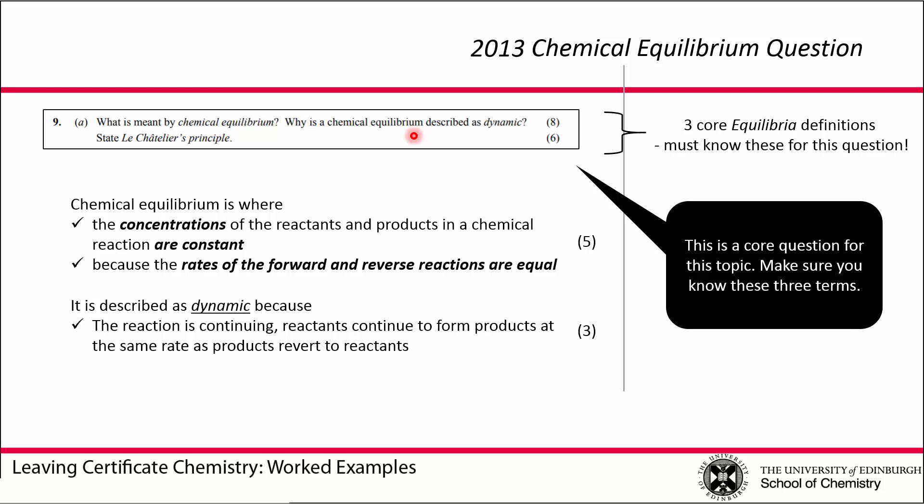It's called dynamic because the reaction is continuing. Even though the concentrations are constant, there are still underpinning reactions—forward reaction and the reverse reaction happening, but they're both happening at the same rate. So the concentrations don't change, but it's dynamic because there is still movement involved.